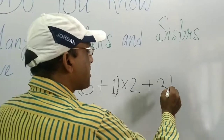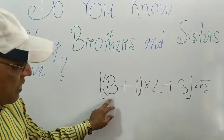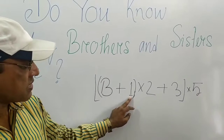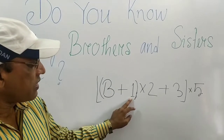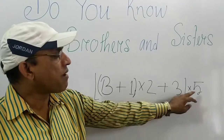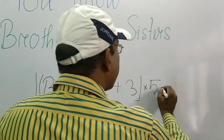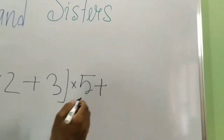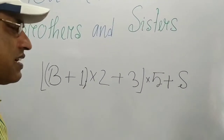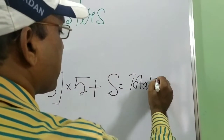That result adding 3, and then multiplying by 5. For example, if brother is 2: 2 plus 1 is 3, 3 into 2 is 6, 6 plus 3 is 9, and multiplying by 5. After adding and multiplying we get one result. Then adding S — the total number of sisters — we get the total number.